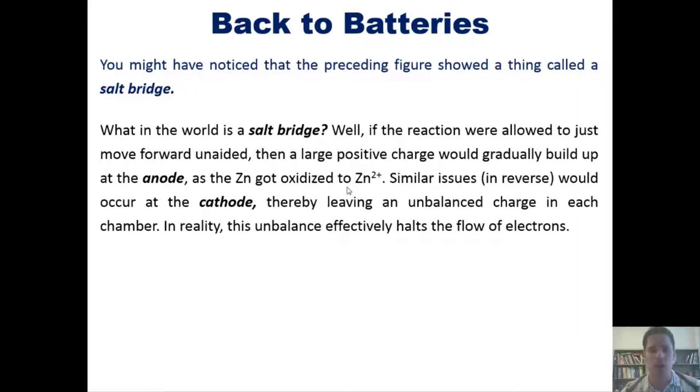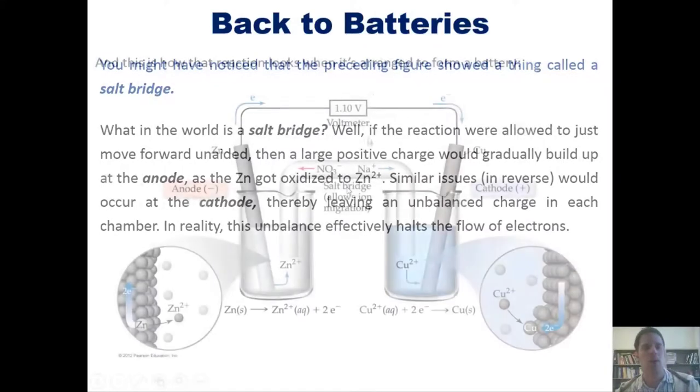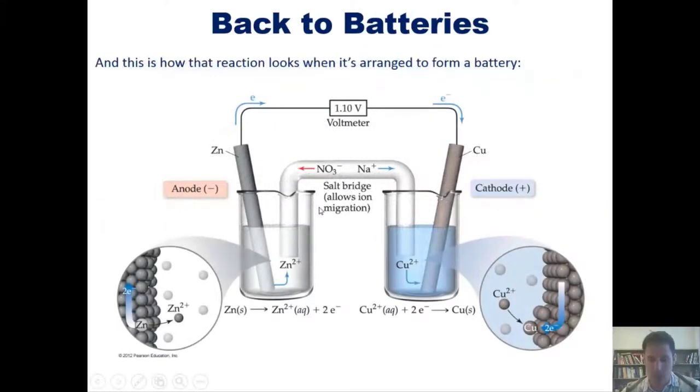Going back then to our figure, you can imagine once again that as the electrons get sucked out of the zinc zero, turning it into Zn2+ and then going into this solution to convert Cu2+ into copper zero, you'd eventually get a huge buildup of Zn2+ in this solution. That would result in a very large net positive charge building up. At some point, having an imbalance of charge—too much positive over here and not enough over here—stops the flow of electrons and kills your battery.